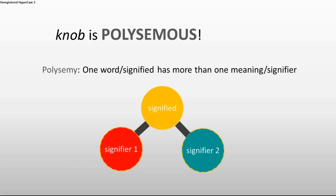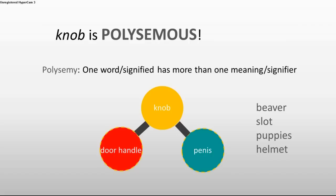Innuendo Bingo also features other words that follow the exact same pattern, which would be beaver, slot, puppies, or helmet. If you know these words, well, good for you. If you don't know, well, good for you. A word that is polysemous can also be called a polyseme.